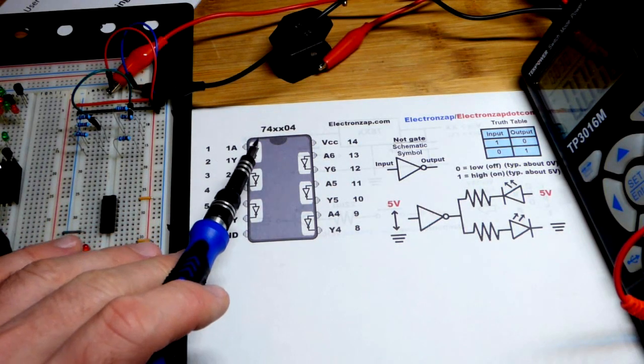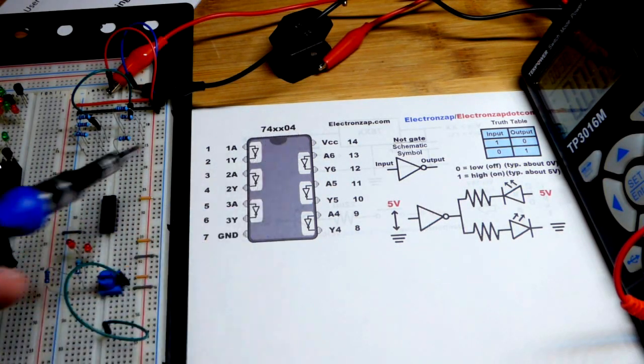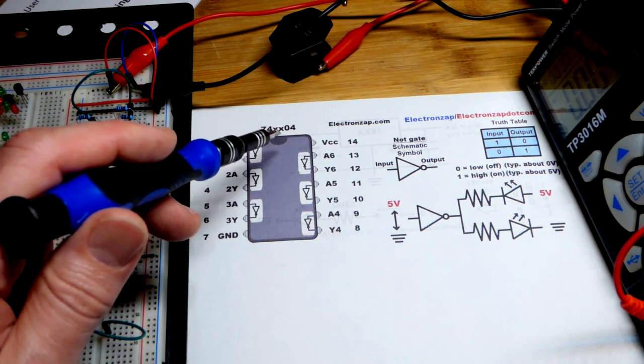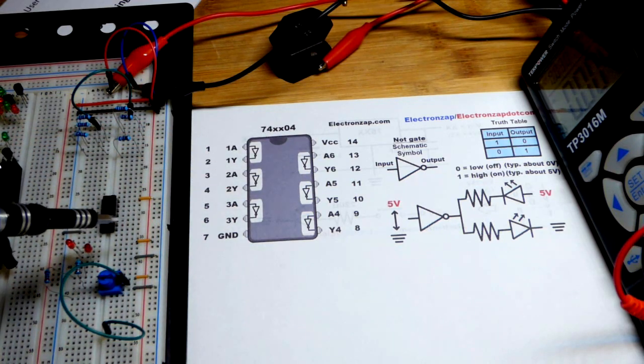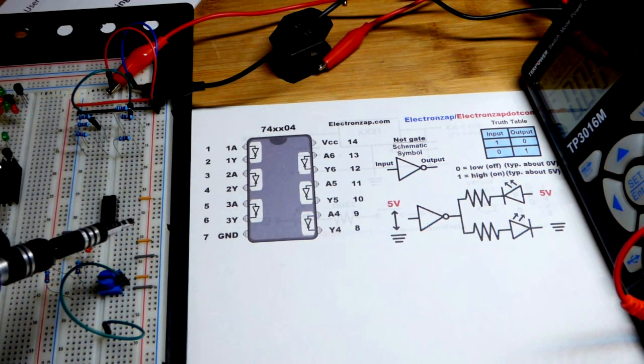So now in this video we're going to look at the 74HC04. There's a number of different versions. This one's HC. I also have the LS version.